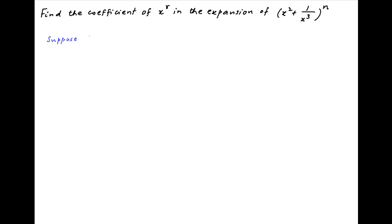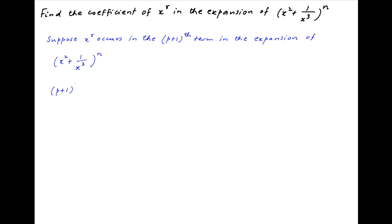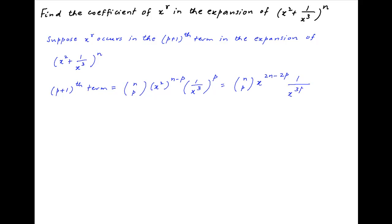Let's assume that x raised to the power r occurs in the (p+1)th term in the binomial expansion of (x² + 1/x³) raised to the power n. The (p+1)th term is equal to n choose p multiplied by x² raised to the power (n minus p), multiplied by 1/x³ raised to the power p. This simplifies to n choose p multiplied by x raised to the power (2n minus 5p).